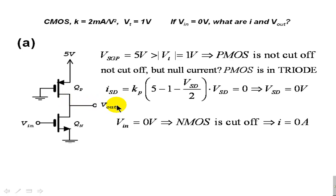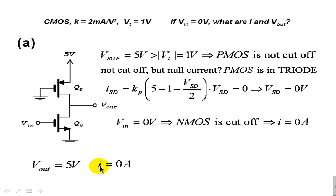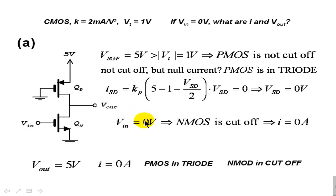The interpretation of VSD = 0 is that Vout is 5 volts. So we have all the answers for this part: Vout is 5 V, the current through both transistors is 0 A, the PMOS is in triode mode, and the NMOS is in cut-off mode. We are done with part A.